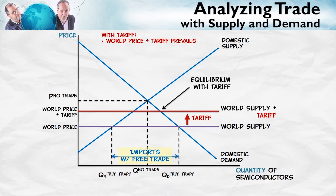At a higher price, domestic consumers are going to demand a lower quantity. So domestic consumption falls from QD free trade to QD with the tariff.